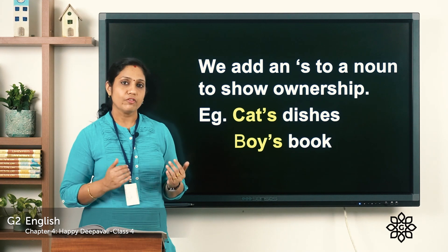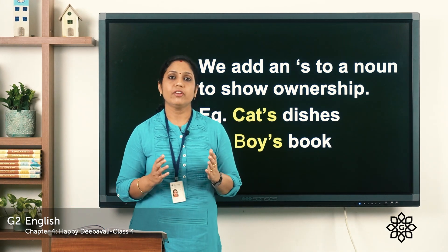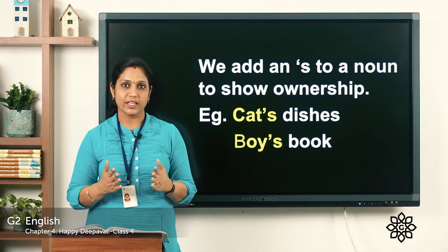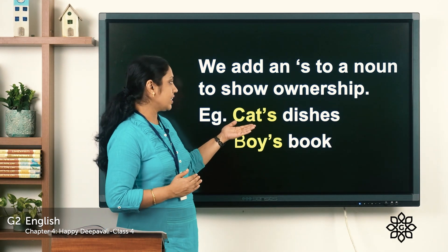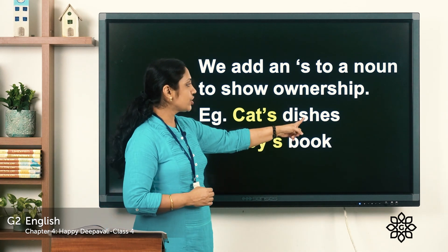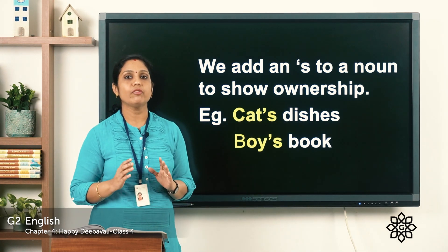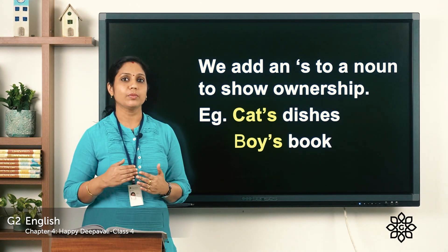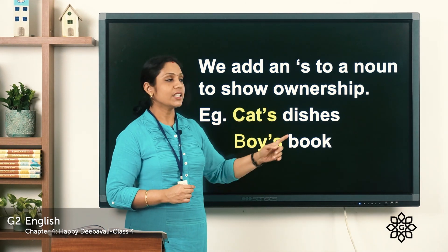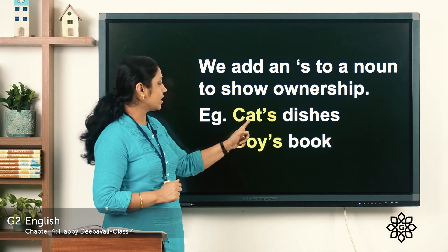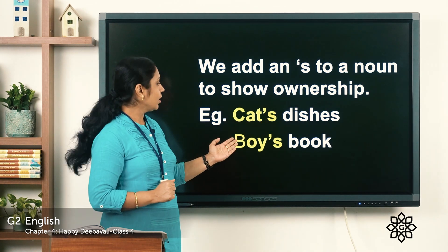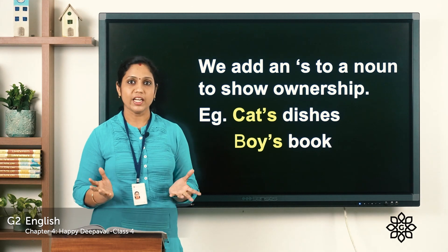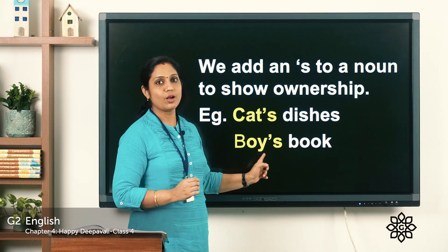For example, consider 'cats dishes.' We have already learned singular and plural nouns — singular is 'cat' and plural is 'cats.' But here it is 'cat's dishes,' meaning the dishes belong to the cat. When showing something belongs to someone, we insert an apostrophe. So 'boy's book' means the book belongs to the boy — it doesn't mean there are many boys.